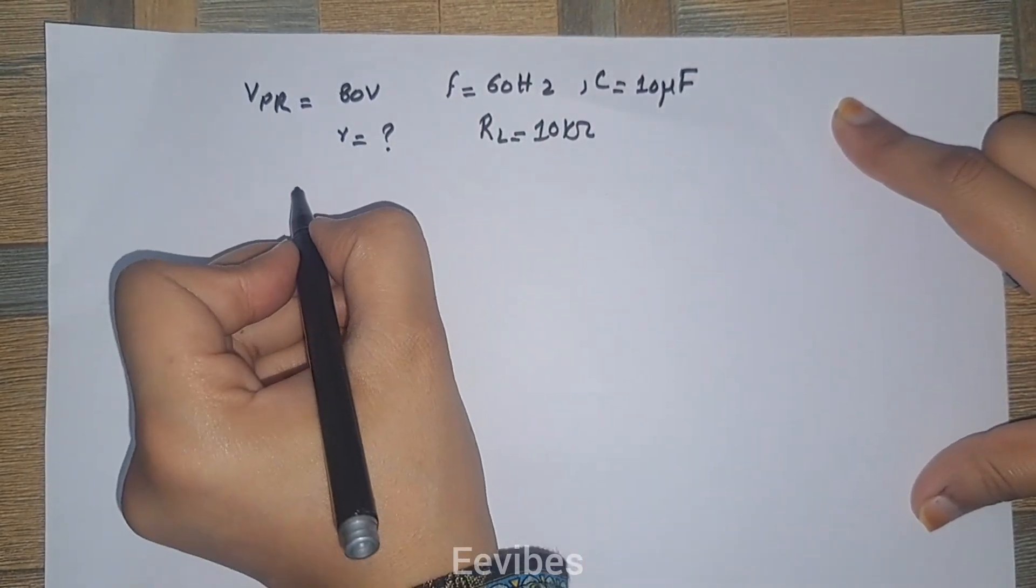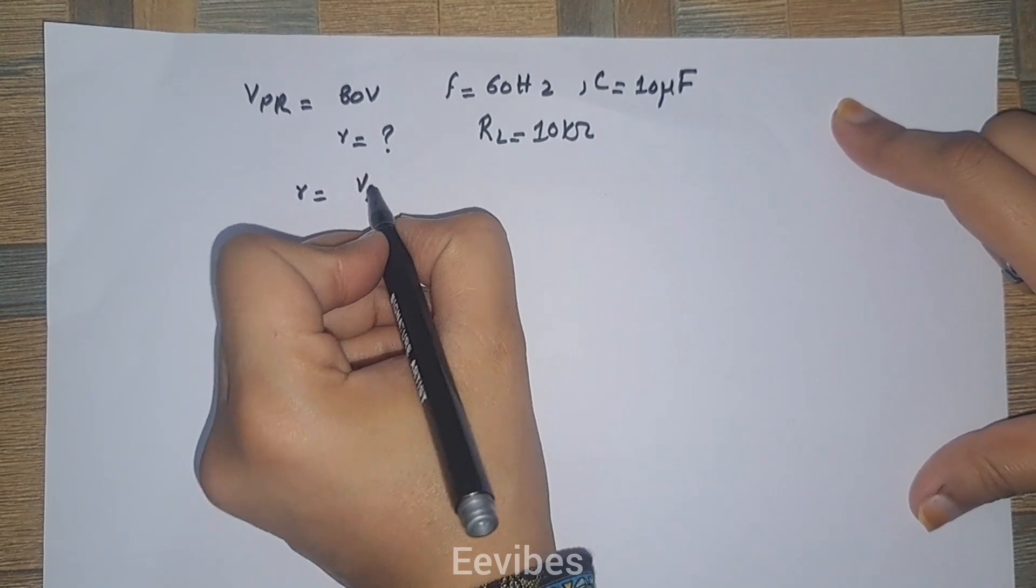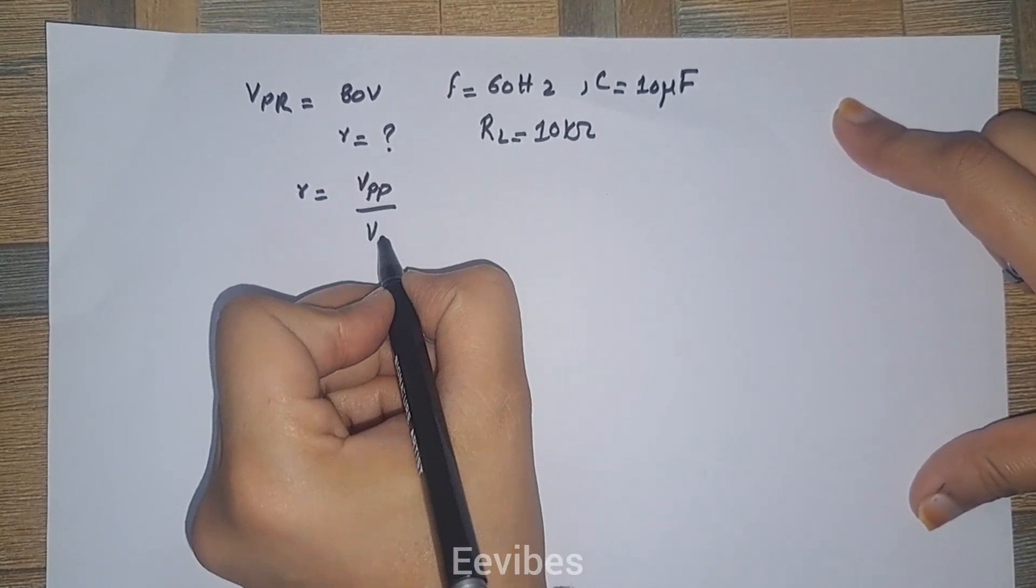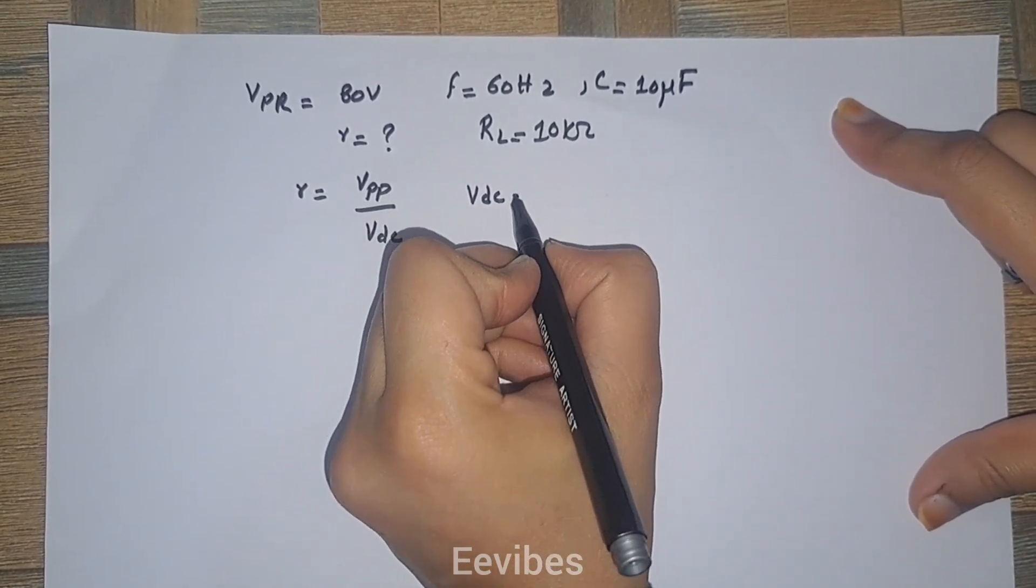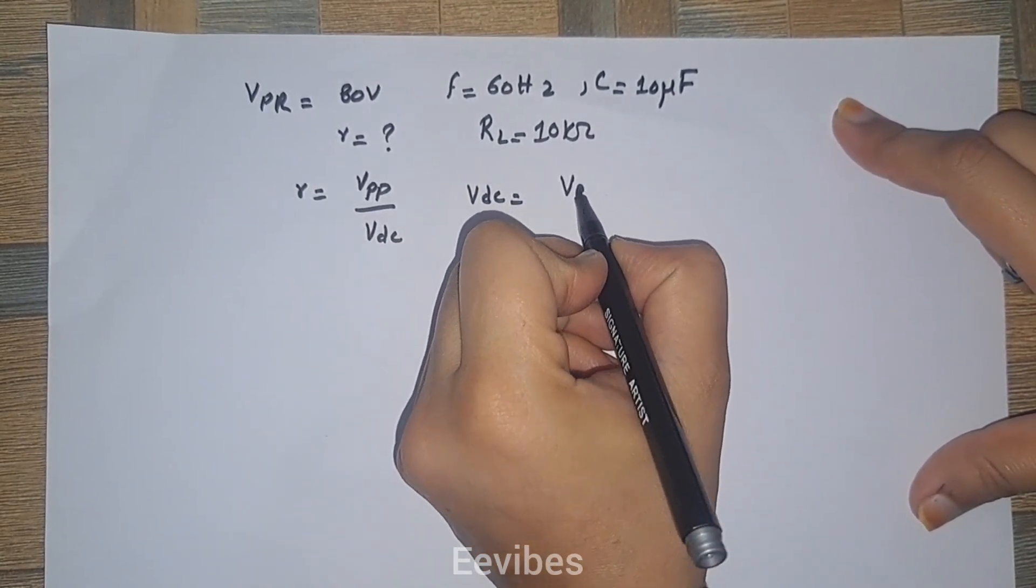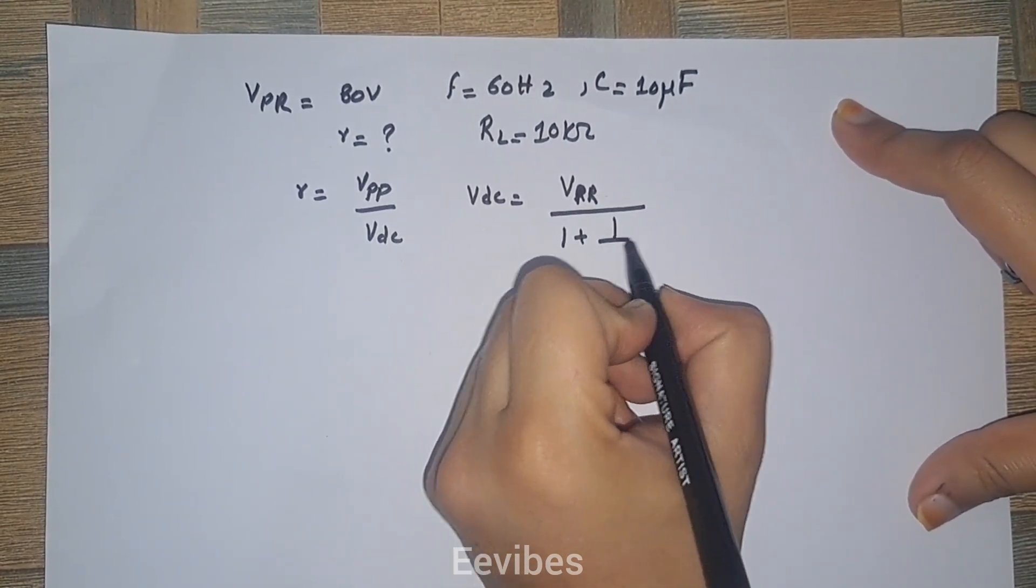We know that the ripple factor is given as the percentage ratio of V peak to peak divided by V DC. And we know that V DC is equal to V peak rectified divided by 1 plus 1 over 2FRLC.